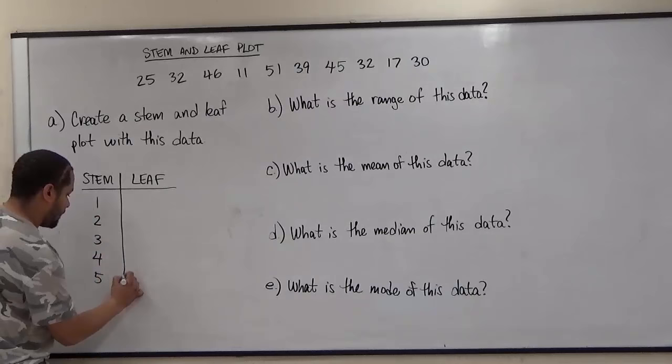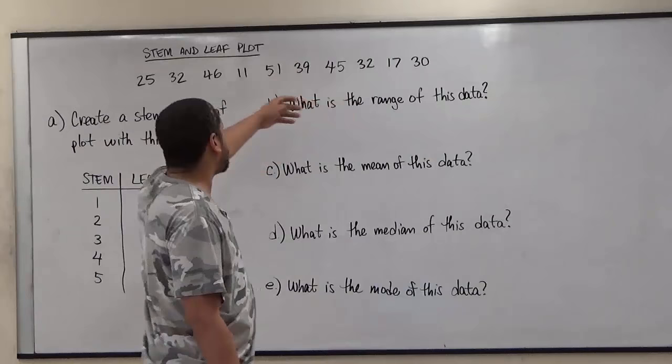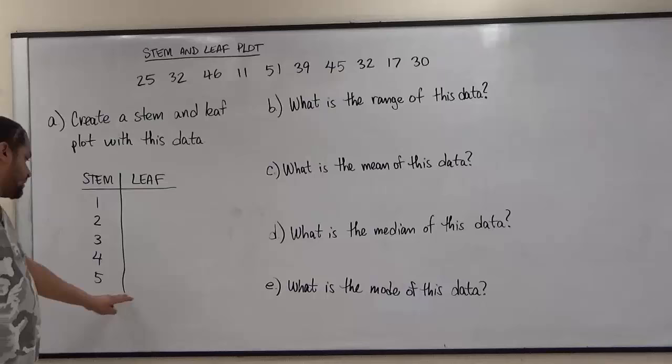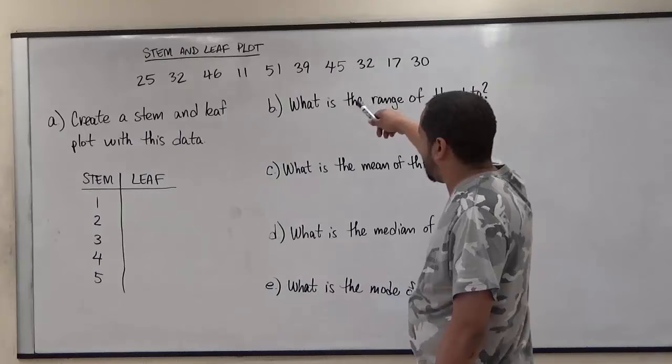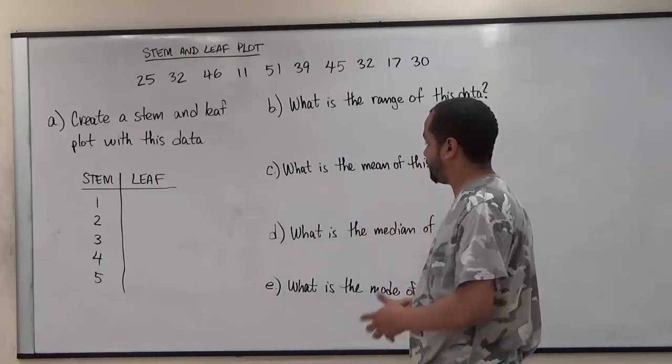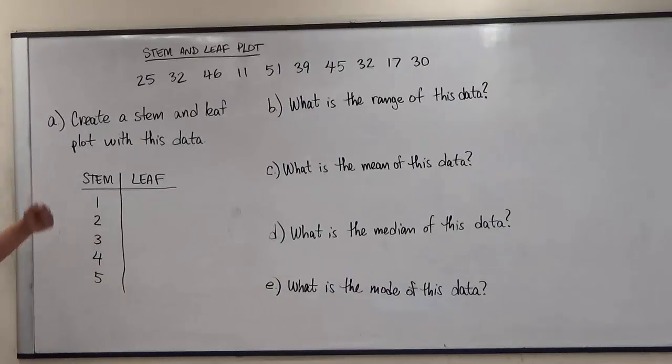Now if your data goes beyond some value, let's say we had a seventy in this and there were no sixties value, we'd still put in the six here and the seven, and next to the six there'd be nothing because there's no sixties. But in this case we have everything from tens to fifties, so every position here is going to have a leaf next to it. It's fine if the stem doesn't have a leaf, it would just remain empty.